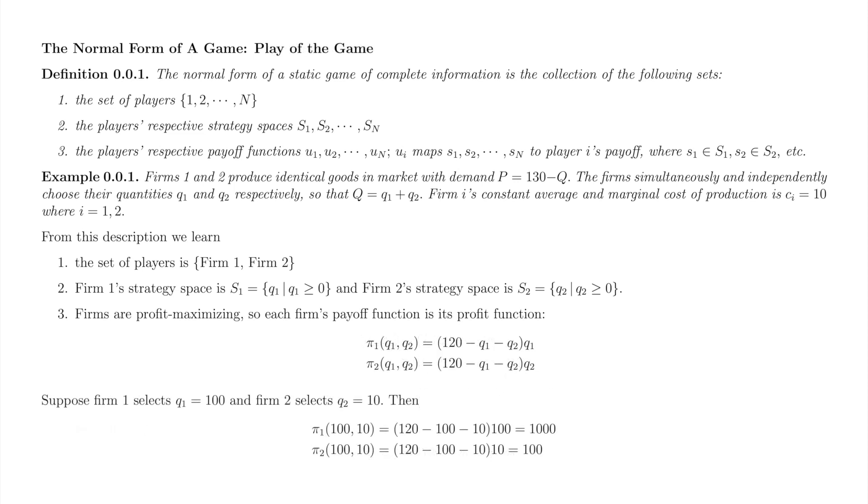Now, let's see everything in action. Suppose firm 1 plays Q1 equals 100 and firm 2 plays Q2 equals 10. Then firm 1's profit is pi 1 of 100 comma 10 which equals 1000. Firm 2's profit is pi 2 of 100 comma 10 which equals 100.